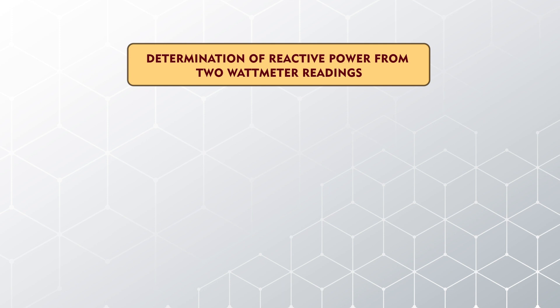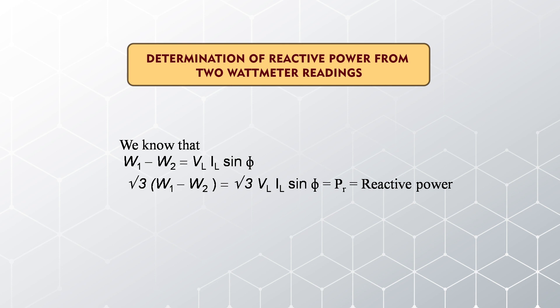Now, how to determine reactive power from the 2-wattmeter reading. From equation 2, W1 minus W2 equals V_L·I_L·sinφ. The reactive power in a 3-phase system is √3·V_L·I_L·sinφ. So, just multiply both sides by √3: √3·(W1 minus W2) equals √3·V_L·I_L·sinφ. Therefore, the reactive power equals √3·(W1 minus W2).